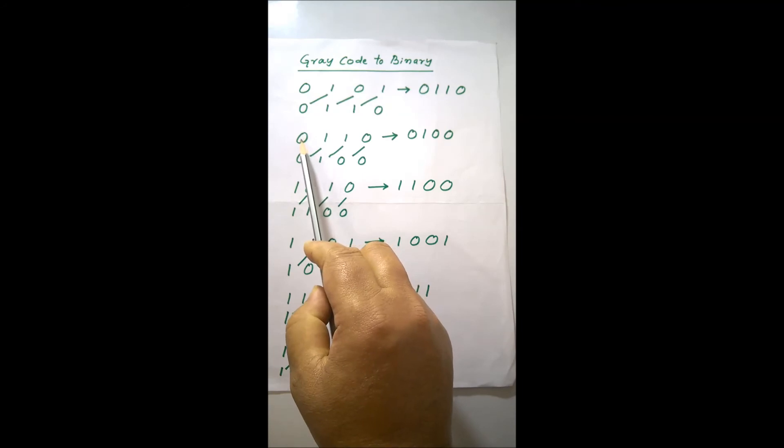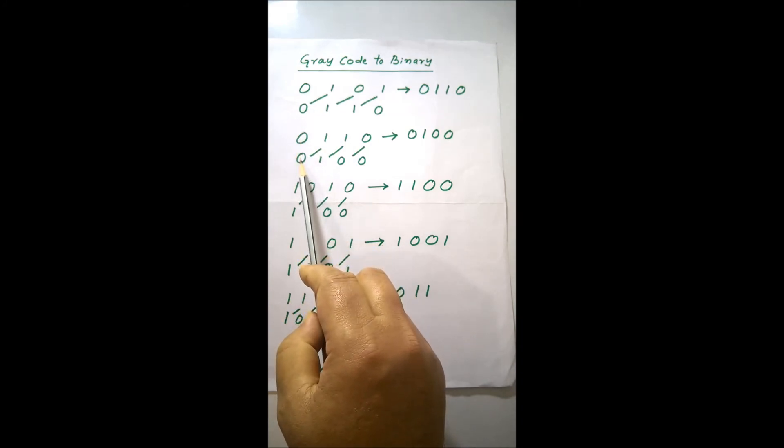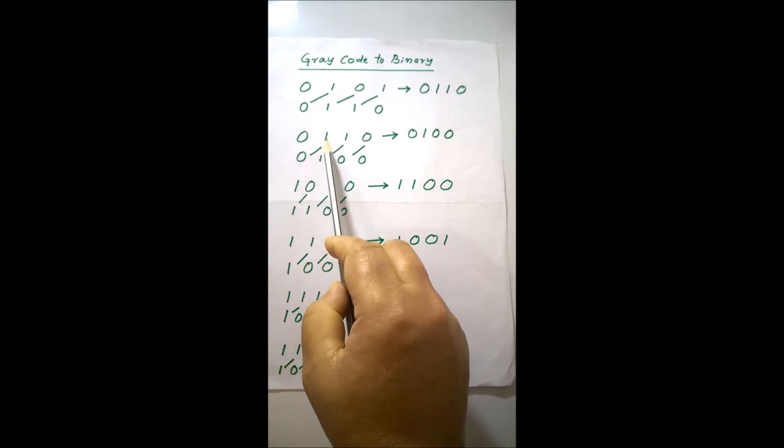Here, you can see that the number is, your grey code is 0, 1, 1, 0. You write the first most significant bit as it is. Then you XOR it. You are getting 1.